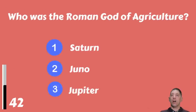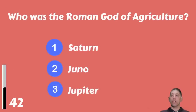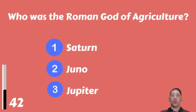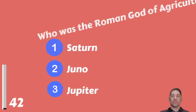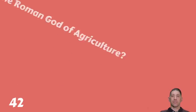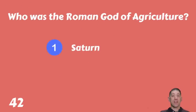Who is the Roman god of agriculture — Saturn, Juno, or Jupiter? The answer is Saturn.